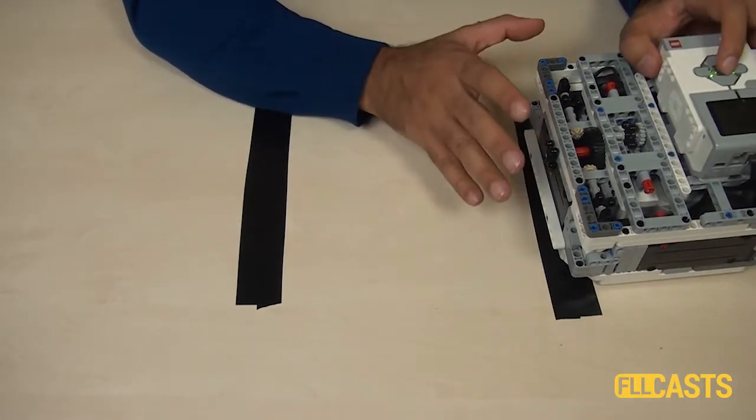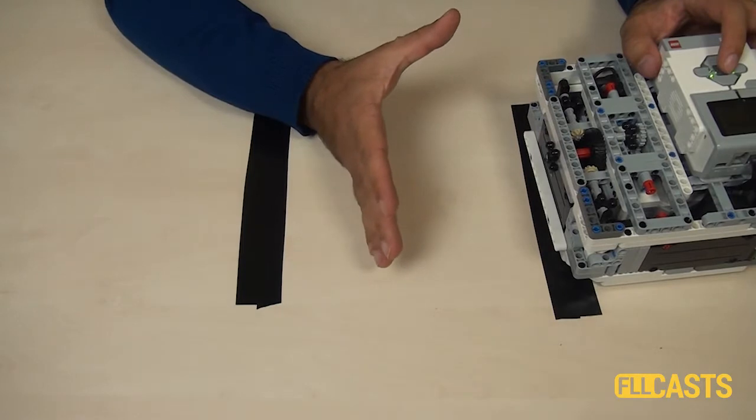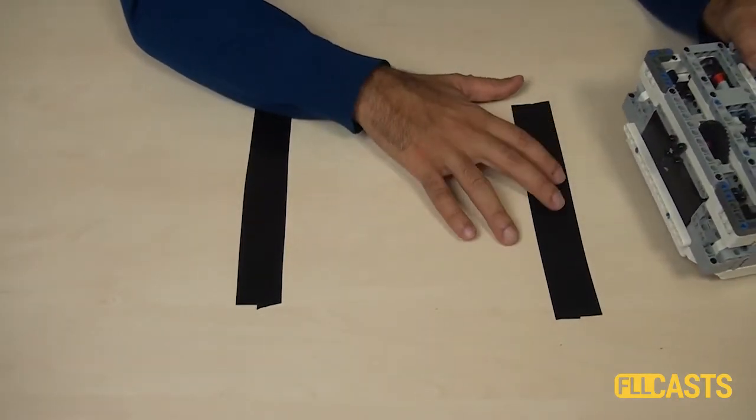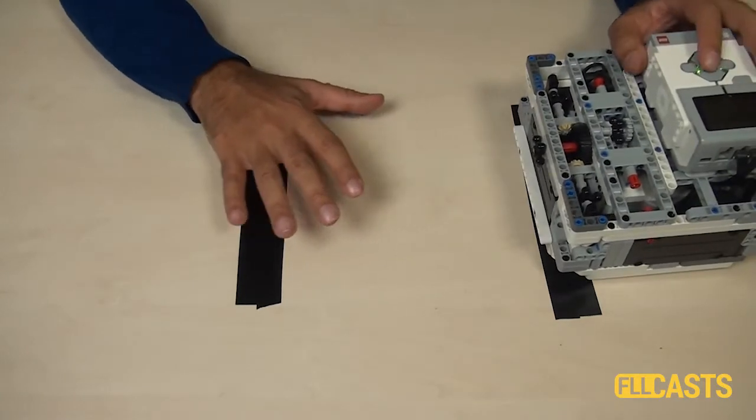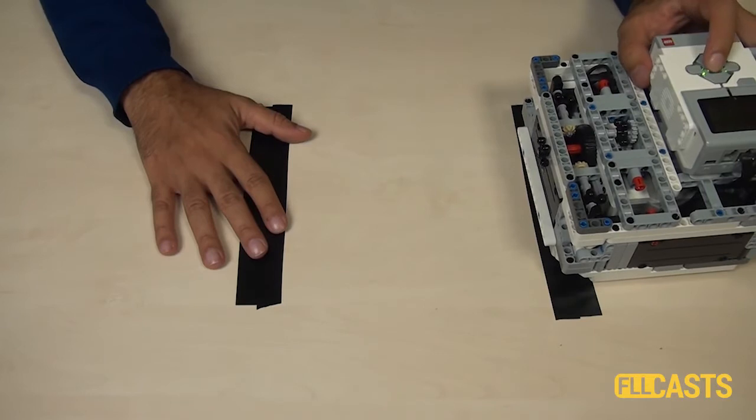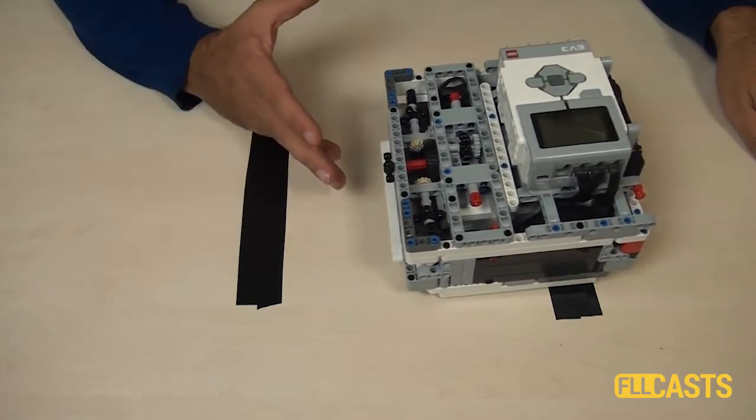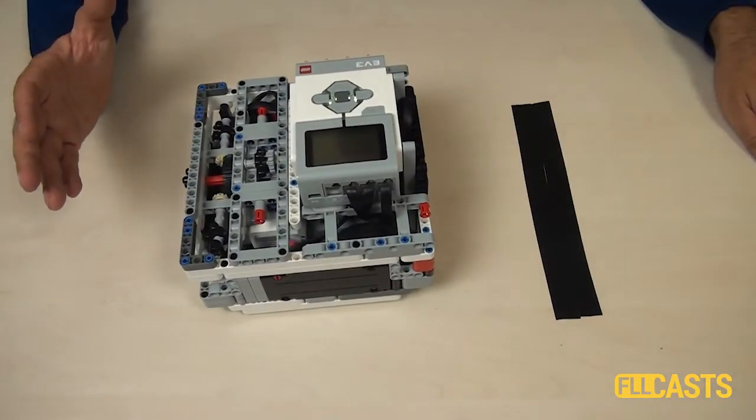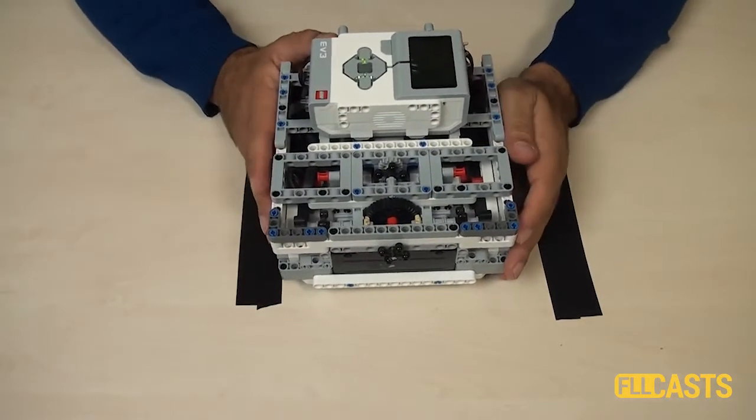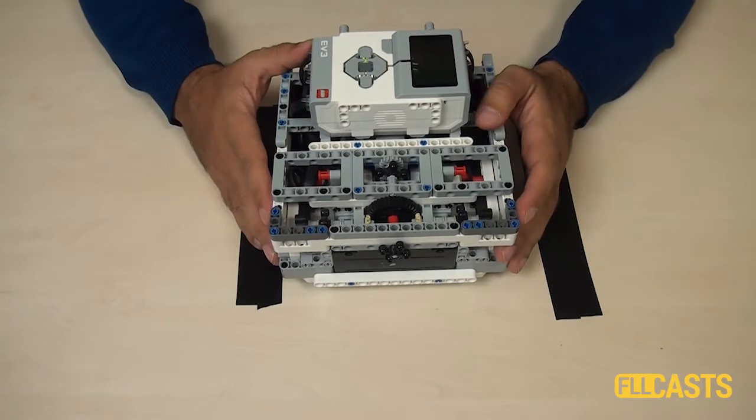Then we calibrate, move for about a second to see the maximum and the minimum value, and then we start looking for a minimum value. Again, the program calibrates, then stops at the black line. So the blocks are in the course. You can download them and use them directly in your programs.